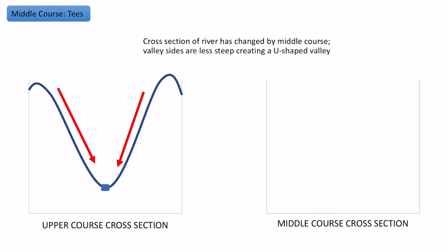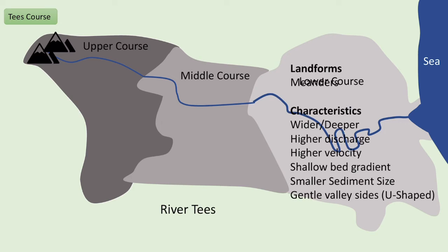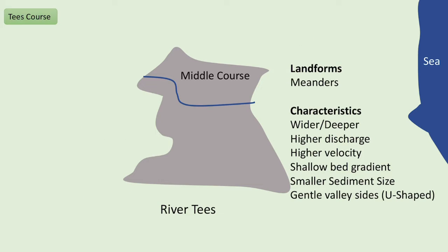In terms of valley profile, the cross section has changed. In the upper course we had a V-shaped valley with very steep sides, but we now have more of a U-shaped cross profile as we can see on the right. To summarise the middle course: meanders are the main landform; the river is much wider and deeper; discharge and velocity are higher; the gradient of the bed is shallower; sediment size is much smaller due to abrasion and attrition; and the valley sides are gentler, forming more of a U-shape.